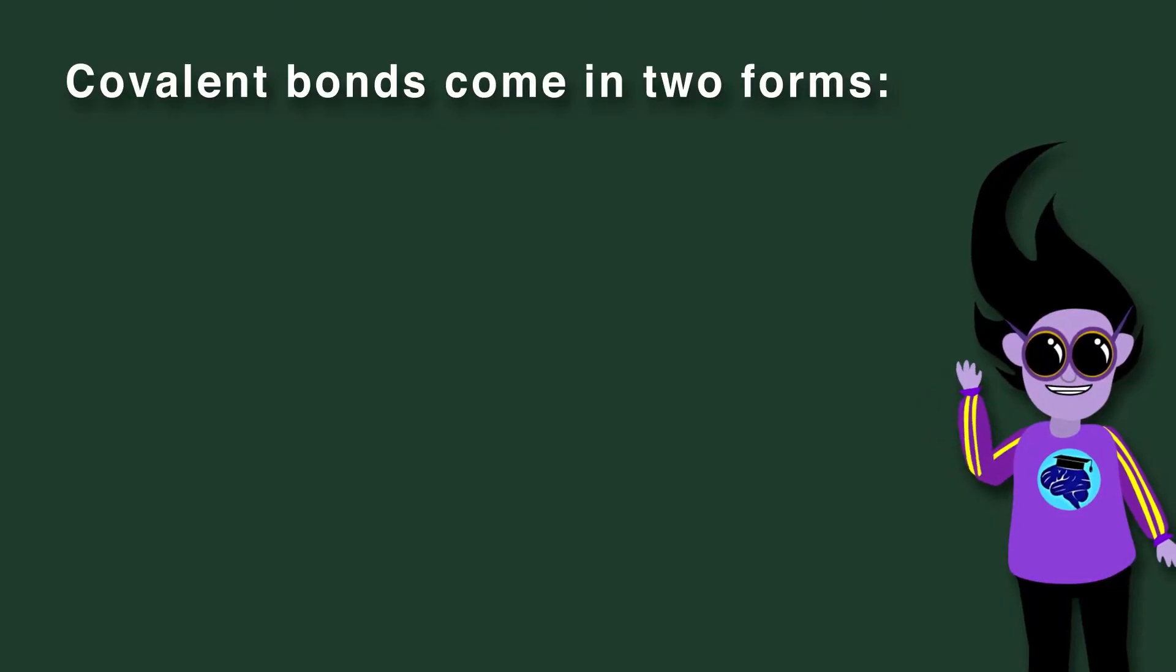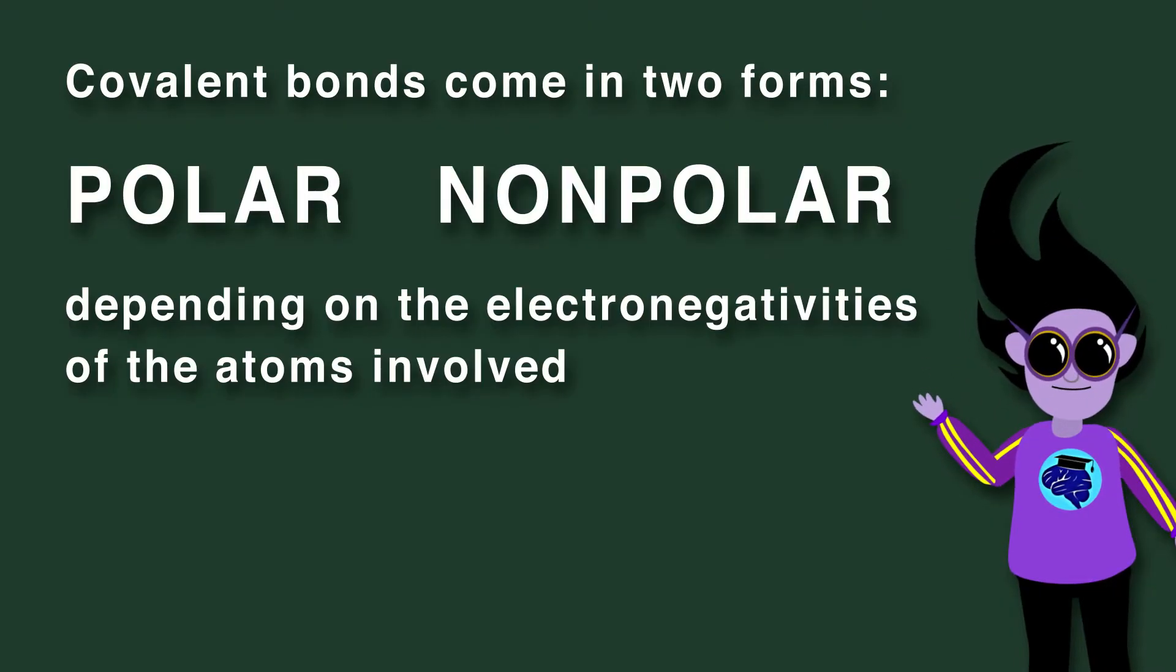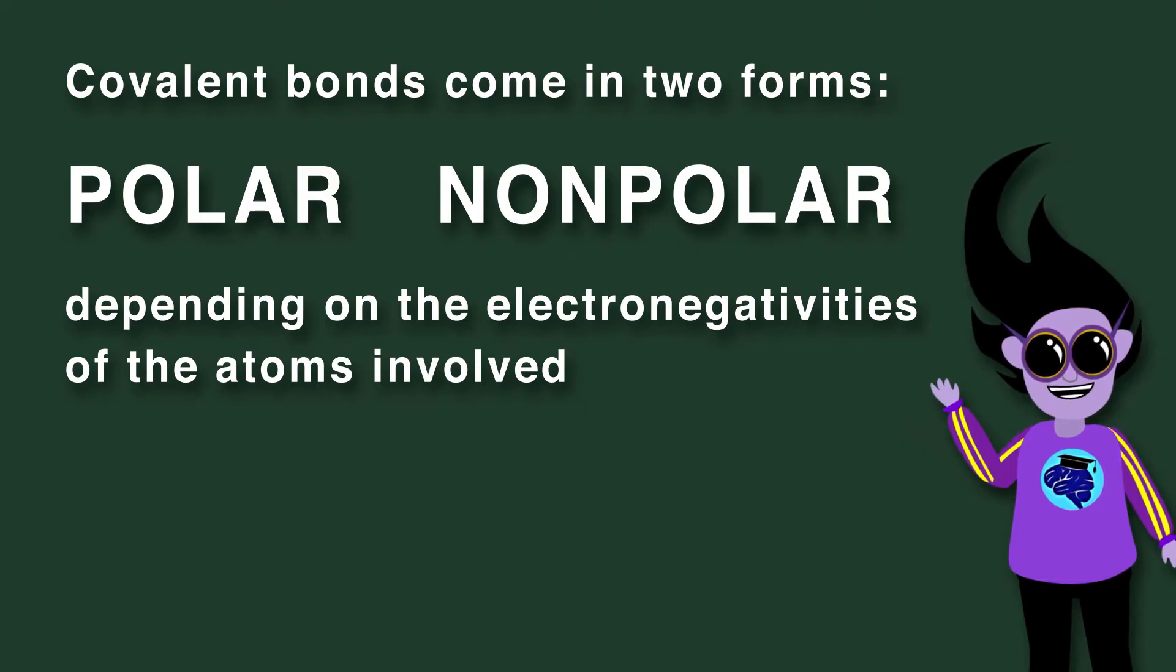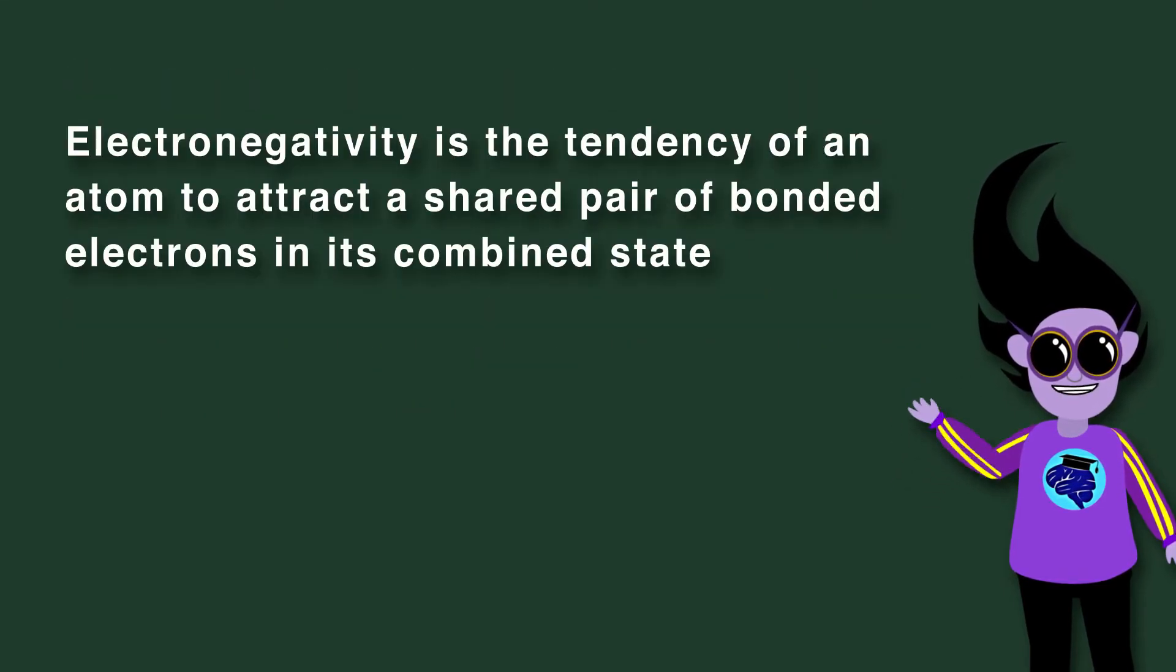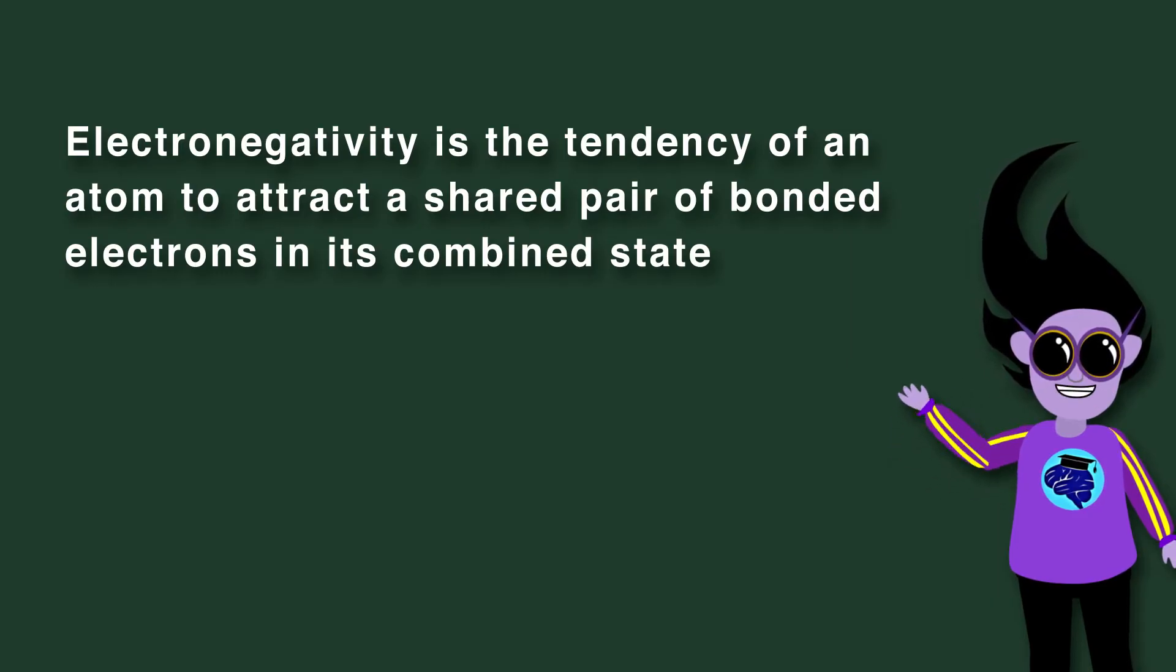Covalent bonds come in two forms, polar and nonpolar, depending on the electronegativities of the atoms involved. Electronegativity is the tendency of an atom to attract a shared pair of bonded electrons in its combined state.